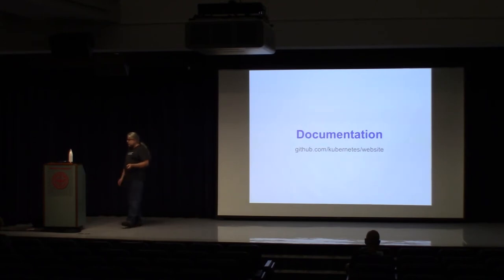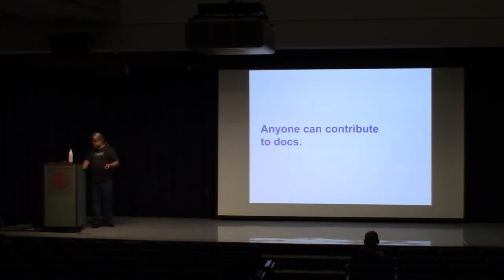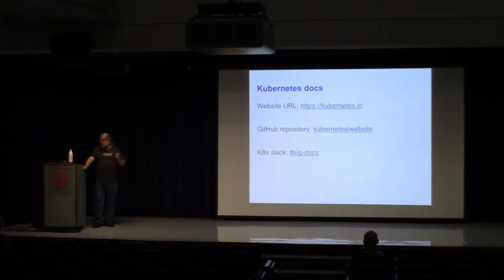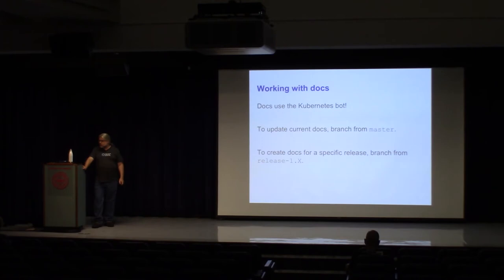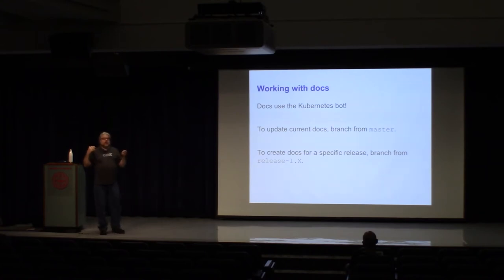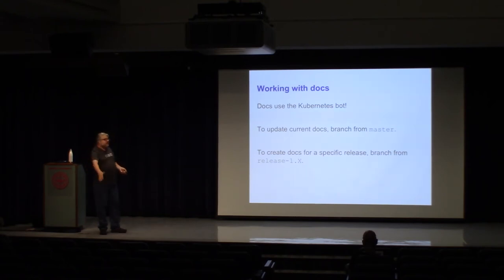Documentation is a really good place to get started. There's the website repository and they're very responsive via Slack — it's a good way to connect with the documentation team. They have a branching setup where the core going forward is master, but they have branches for each major Kubernetes release so we can have past versions of the docs for older versions of Kubernetes.